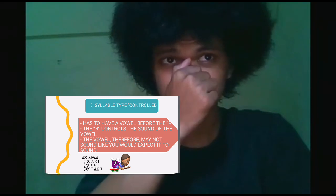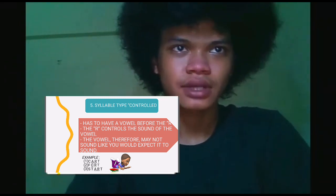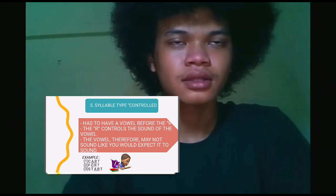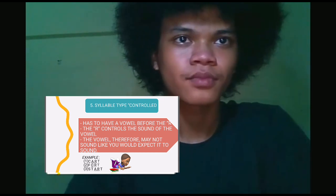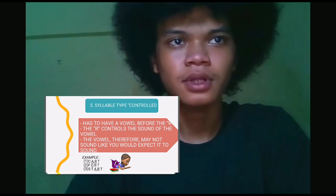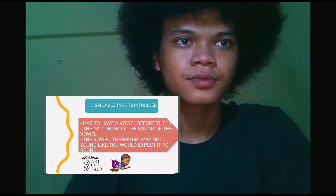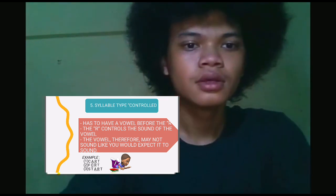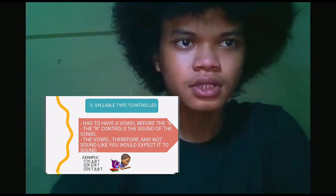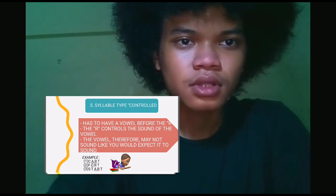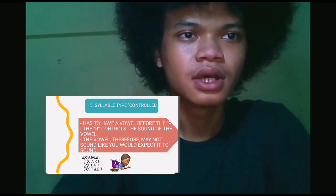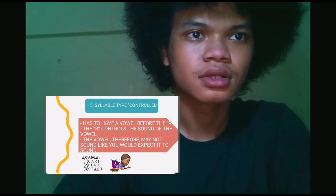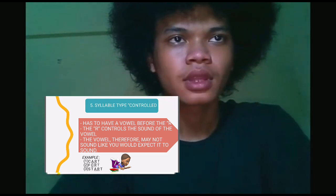Next is the R-controlled syllable type, or in another explanation it could be called 'bossing R.' This syllable has a vowel before the R, and when there is a vowel before the R, the R sound is stressed. For example: cart, fort, start, and others.